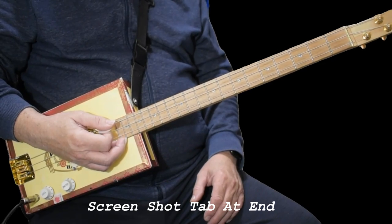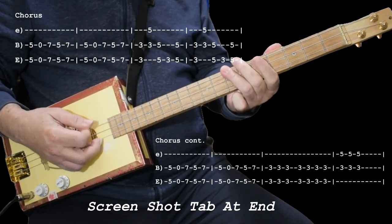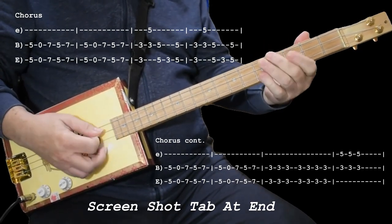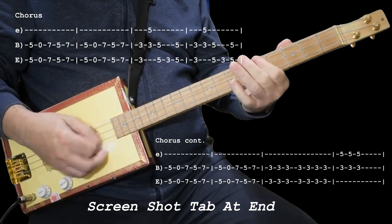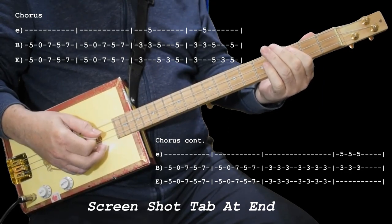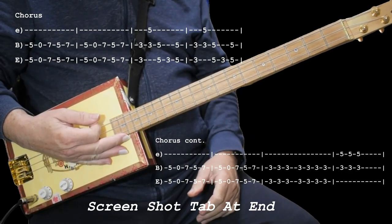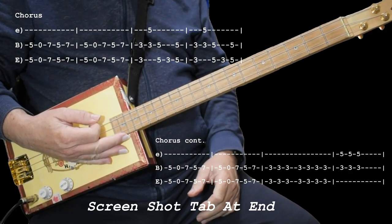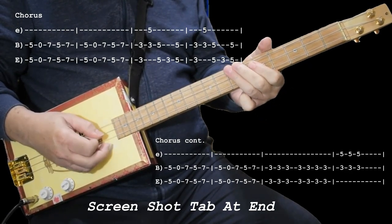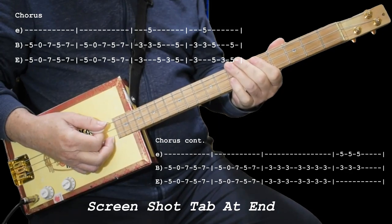Okay, the next part of the song, which is the chorus, that was the verse. This is the chorus. I'll just play the whole thing for you first. Like that. And that makes up the chorus. So that's five, then open, then seven, and then five, seven. Like that. You do that twice.